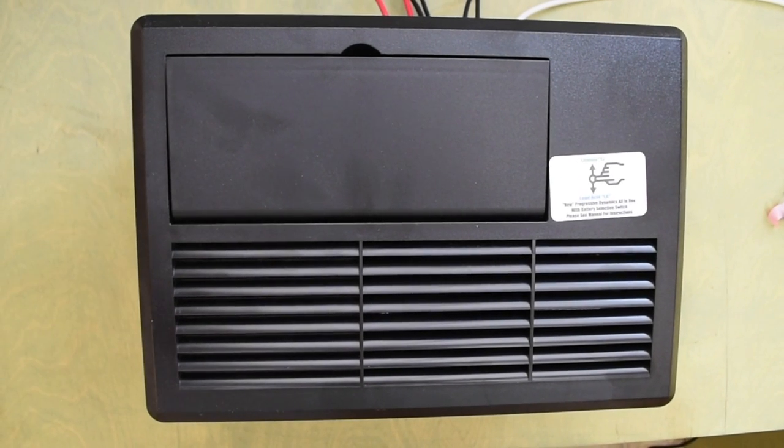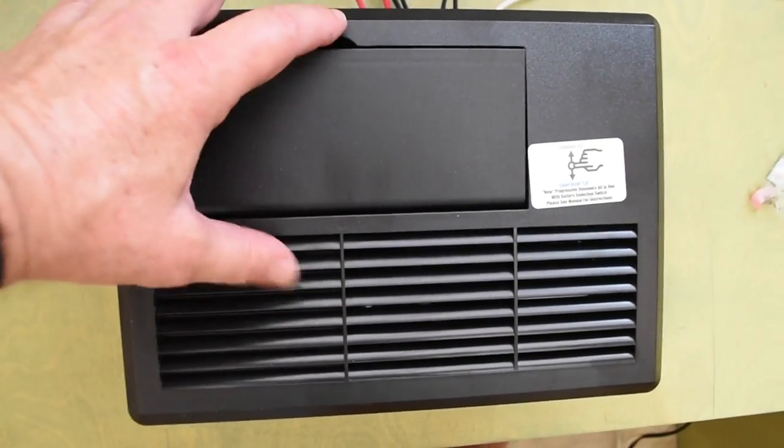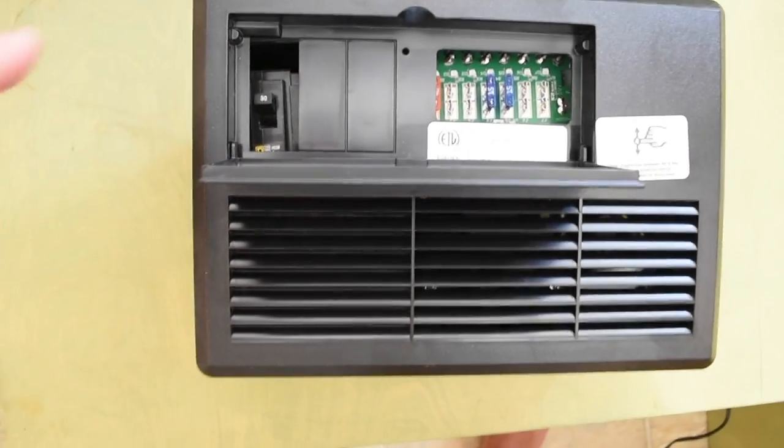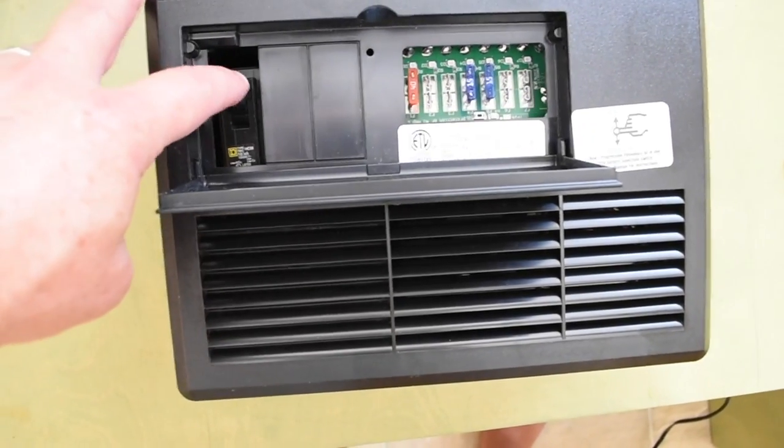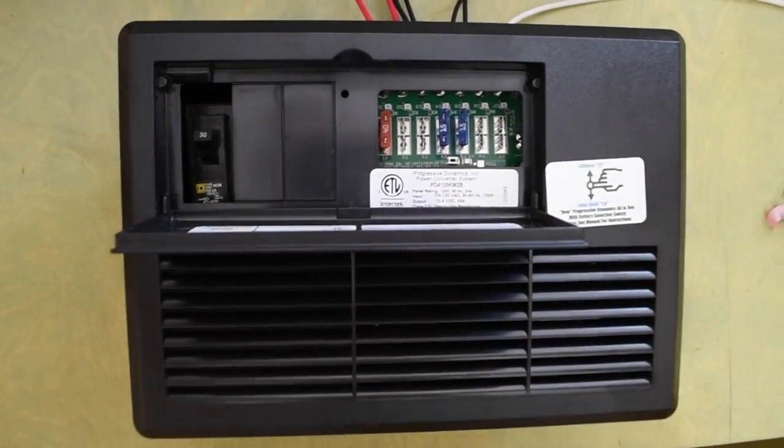I'm replacing my dead power center with a Power Dynamics 4100 power center. And here's the cover. And when open, what we'll have in this is the AC circuit breakers on the left, and then the DC fuses on the right side of this.